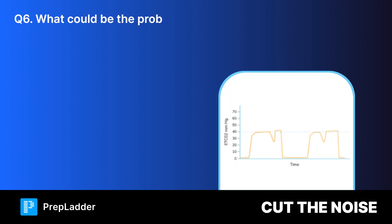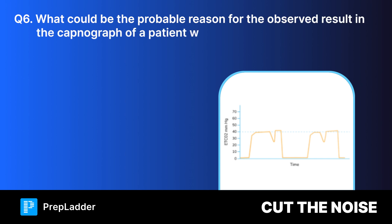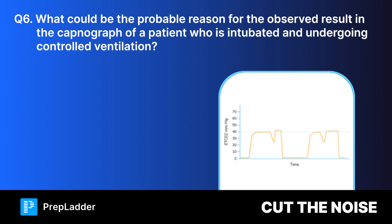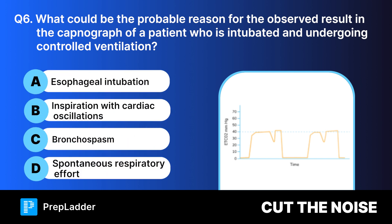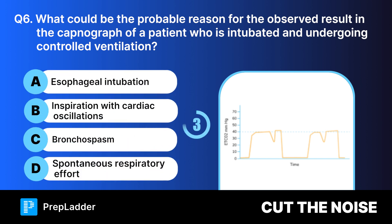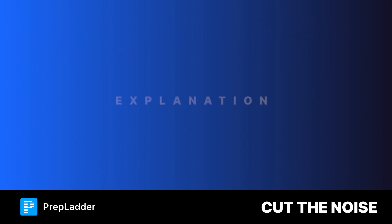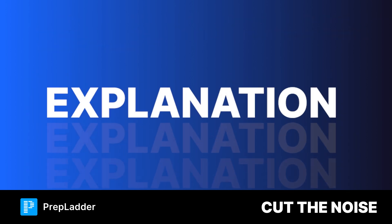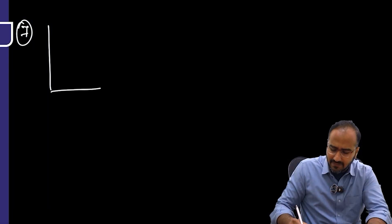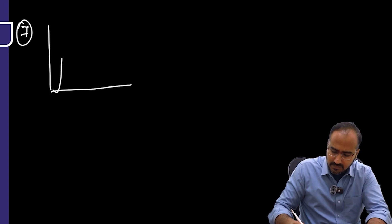Question number six: what could be the probable reason for the observed result in the capnograph of a patient who has been intubated and is undergoing controlled ventilation? The correct answer is spontaneous respiratory effort.